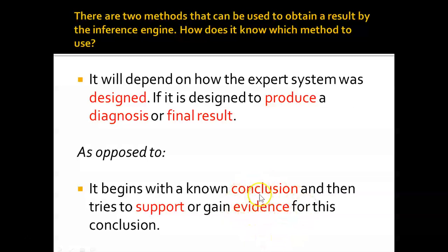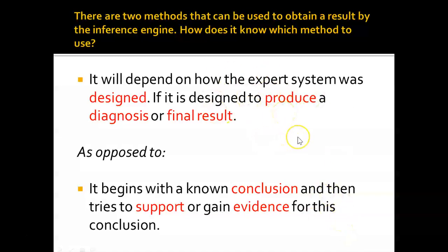The other method begins with a known conclusion and then tries to find evidence to support it. For example, in a medical expert system you might think you have a sinus infection. You tell the expert system what you think you have, and then it tries to prove it by asking questions related to sinus infections. If you affirm them, it proves you have that condition — whereas in the first method the system reaches the diagnosis on its own through questioning.